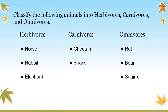So you can see on the screen the animals we have divided into herbivores, carnivores, and omnivores. Horse, rabbit, and elephant are herbivores. Cheetah and shark are carnivores. Rat, bear, and squirrel are omnivores.